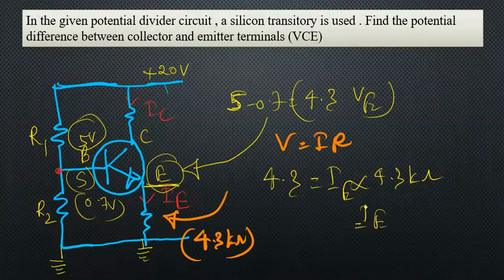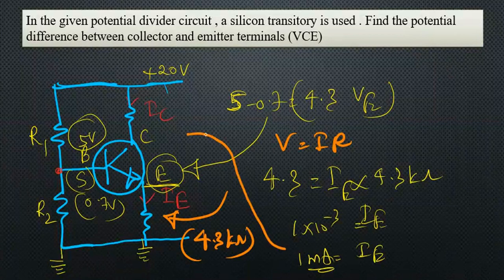Here, 4.3 over—they cancel kiloohms, divided by 1, so 1 times 10 to the power minus 3. IE, that means 1 milliamp.